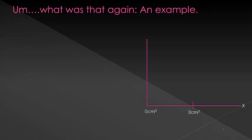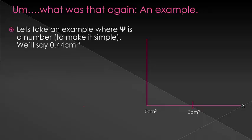Here we have an example of using the idea of psi and psi squared. But because the wave functions are pretty complicated, we're going to do it for the simplest function possible, just a number. So let's say that we have a function that is equal to 0.44 centimeters cubed. We can graph that as just a simple straight horizontal line.